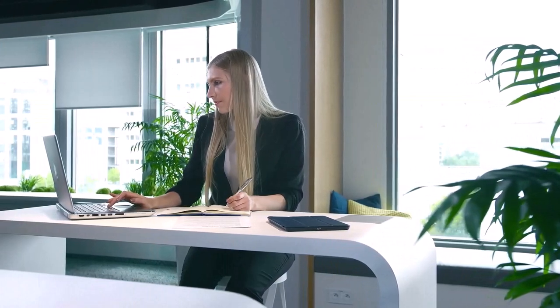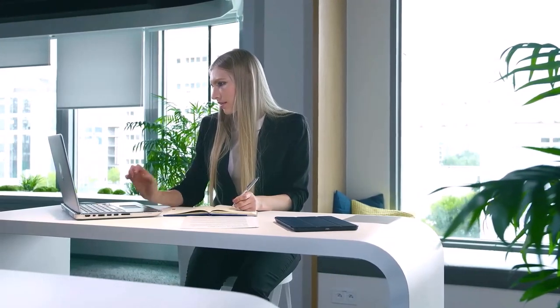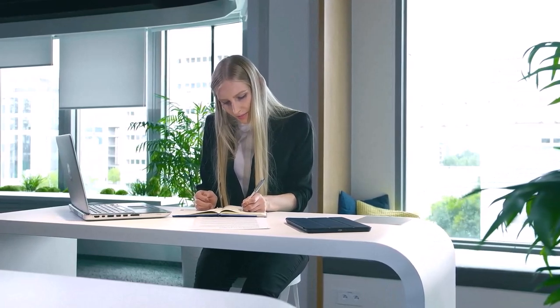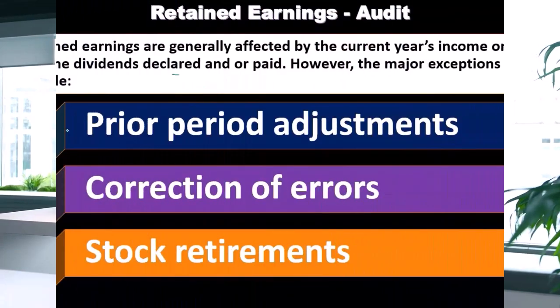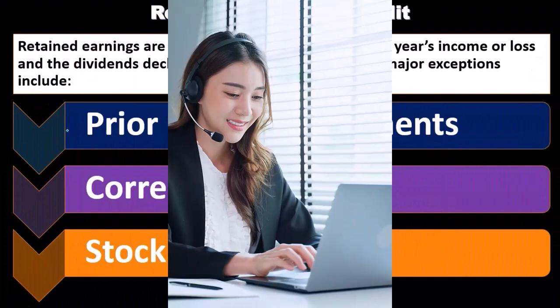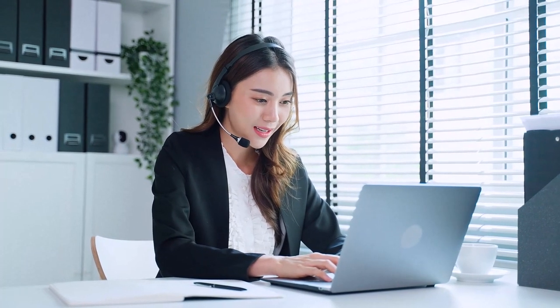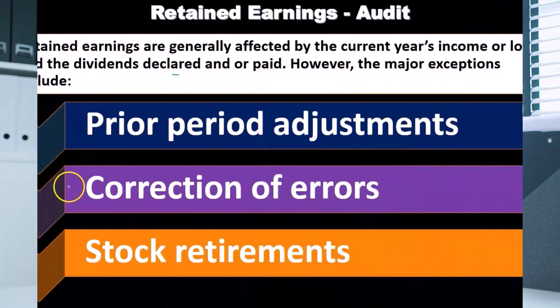In small companies, checking that retained earnings rolled forward correctly is one of the first things you want to look at. Consider whether any prior period adjustments were made correctly or incorrectly. The best way to do that is to match up the balance sheet accounts as of the end of last year to what's currently in the system, and then you can see what the differences are.